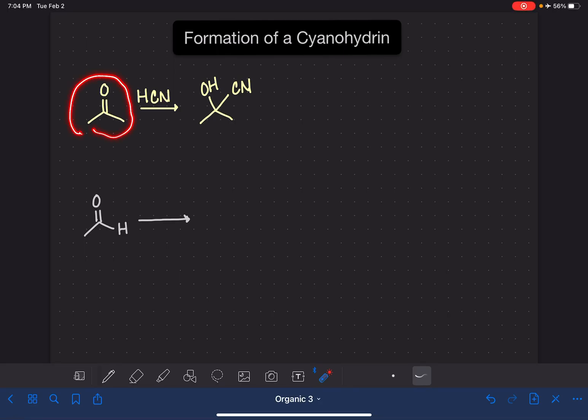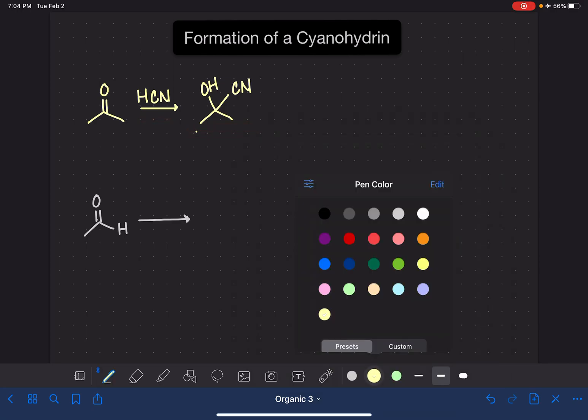When an aldehyde or ketone is reacted with HCN, the product of the reaction has an OH group and a cyano group on the same carbon. This is called a cyanohydrin.